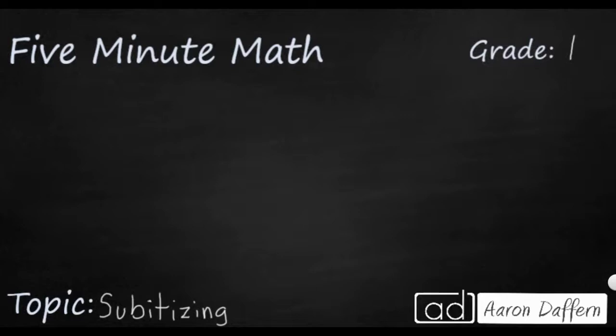So subitizing is a fancy word, but it simply means rather than counting, can you instantly recognize how many dots are in this pattern. We see this pattern here and there are many different ways that we can see that it's 5. One way would be to split this up and say that's 2 and that's 3. So 2 and 3 make 5, or maybe you looked at it like those 2 and then those 3.